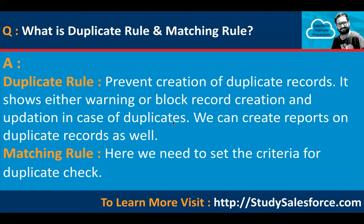What is the duplicate tool and matching rule? The duplicate tool prevents creation of duplicate records — it shows either a warning or blocks record creation and update in case of duplicates. We can create reports on duplicate records as well. We can also apply record sharing: there are two options — bypass sharing or enforce sharing. The matching rule is where we set the criteria for the duplicate check.